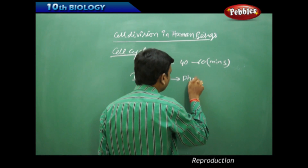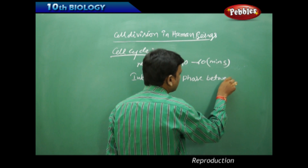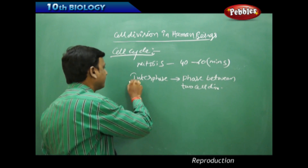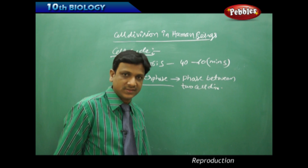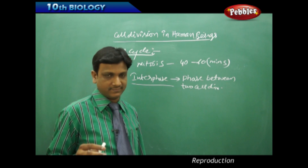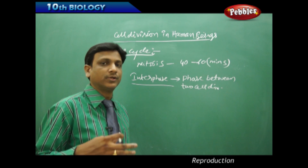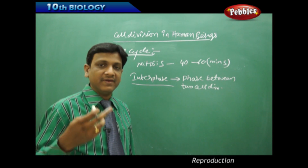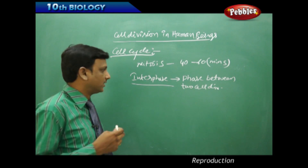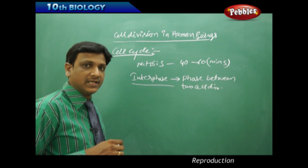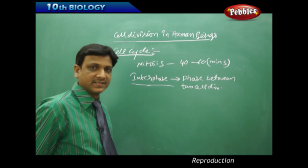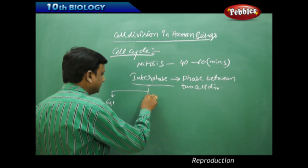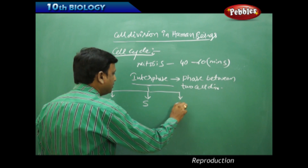Interphase is the phase between two cell divisions. It is the phase in which the genetic material is duplicated, because the genetic material has to be equally distributed to the two daughter cells. In mitosis, the daughter cells will have the same number of chromosomes as the parent. Such duplication of genetic material takes place during interphase, which is divided into three phases: G1 phase, S phase, and G2 phase.